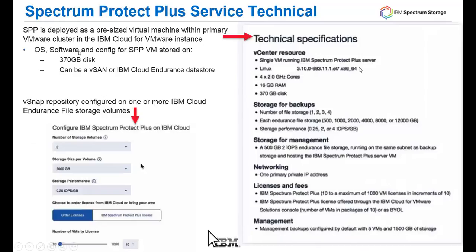Spectrum Protect Plus will be deployed as a pre-sized virtual machine within the primary VMware cluster in the IBM Cloud for VMware instance. These are the technical specifications for what is automatically created and deployed. You will need to make decisions on the size of your vSnap — where backups are stored — including the number of storage volumes, the storage size per volume, and the storage performance. This is where the sizing guide is helpful. On this page you'll also choose to either order the license from the Cloud Portal or bring your own Spectrum Protect Plus license from Passport Advantage, and choose the number of virtual machines you want to license in packs of 10.